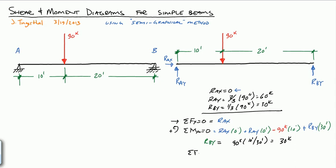Finally, we take the sum of forces in the y direction equal to 0, calling up positive. We get Ray plus Rby minus 90 kips equals 0. We just found Rby is 30 kips, so Ray equals 90 kips minus 30 kips, which is 60 kips — the same result we found earlier.